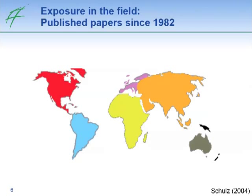Before looking into an example of such an exposure study, I would like to introduce what we know about the exposure of aquatic systems to insecticides. Initial studies monitoring insecticides in the field were conducted in Canada and the US, followed by additional studies in Europe and Japan. Around the year 2000, we had hardly any information on insecticide exposure in aquatic systems on the southern hemisphere, although pesticides had been used there in extensive agricultural areas for many years.